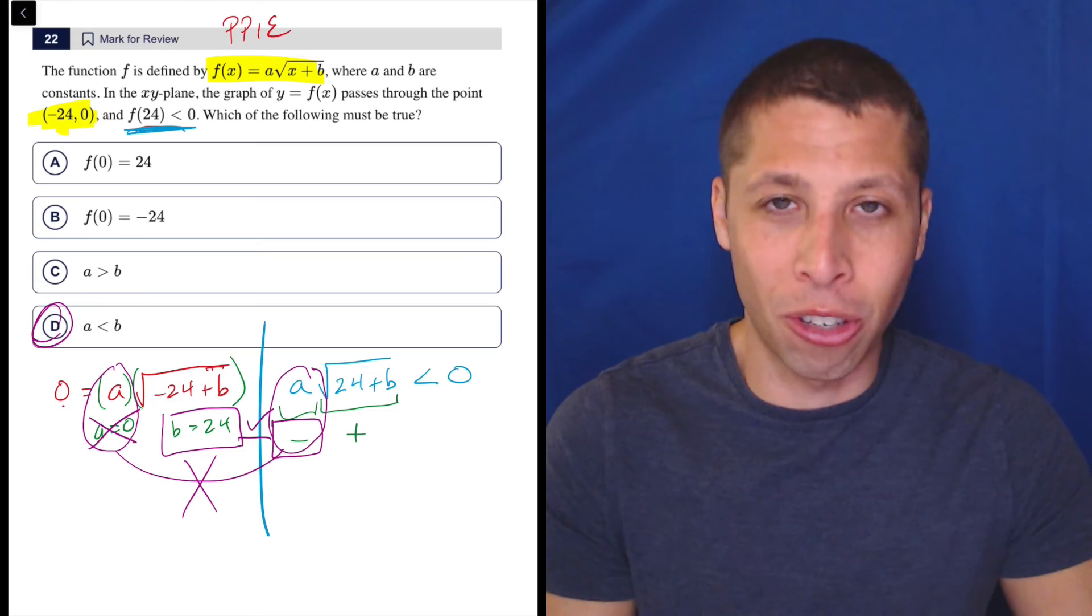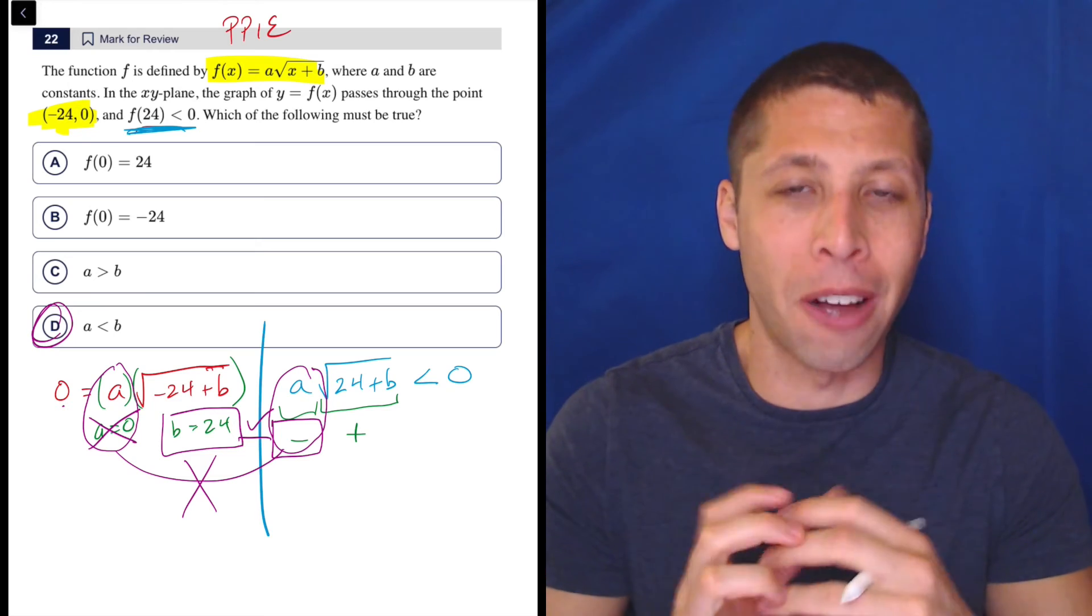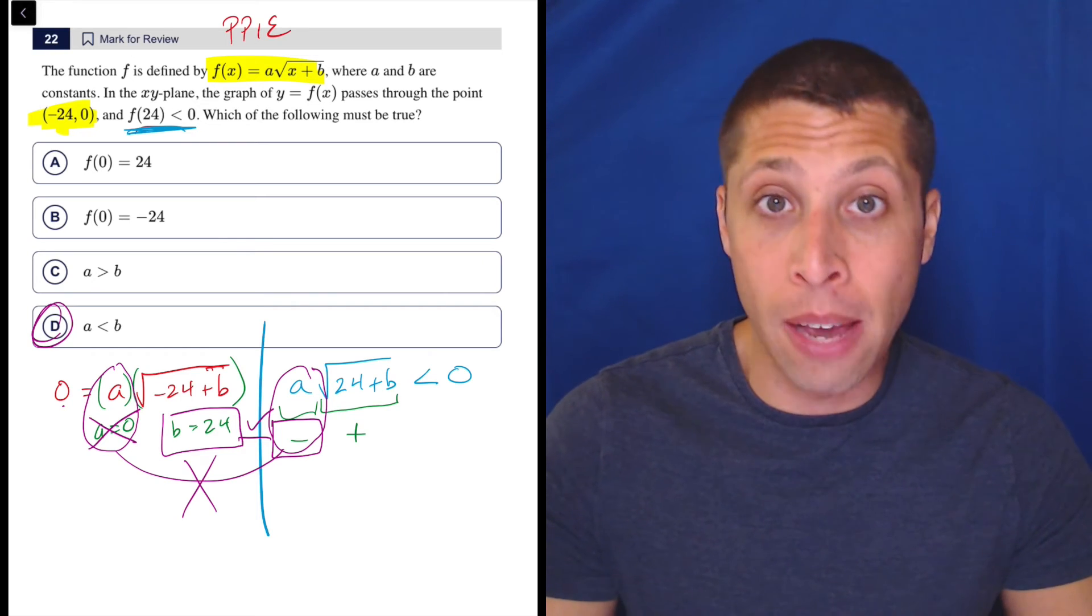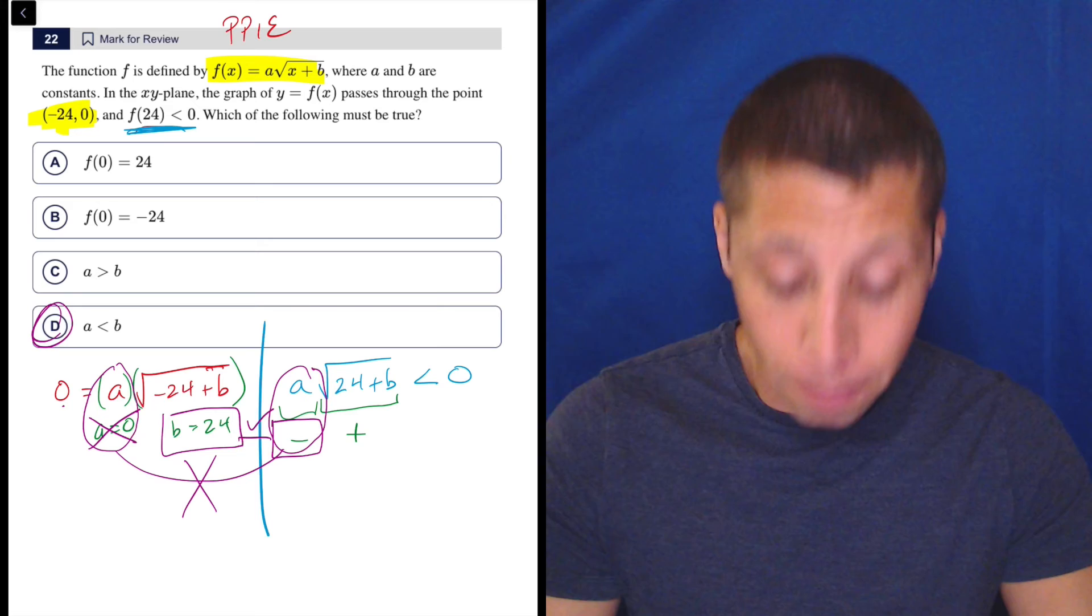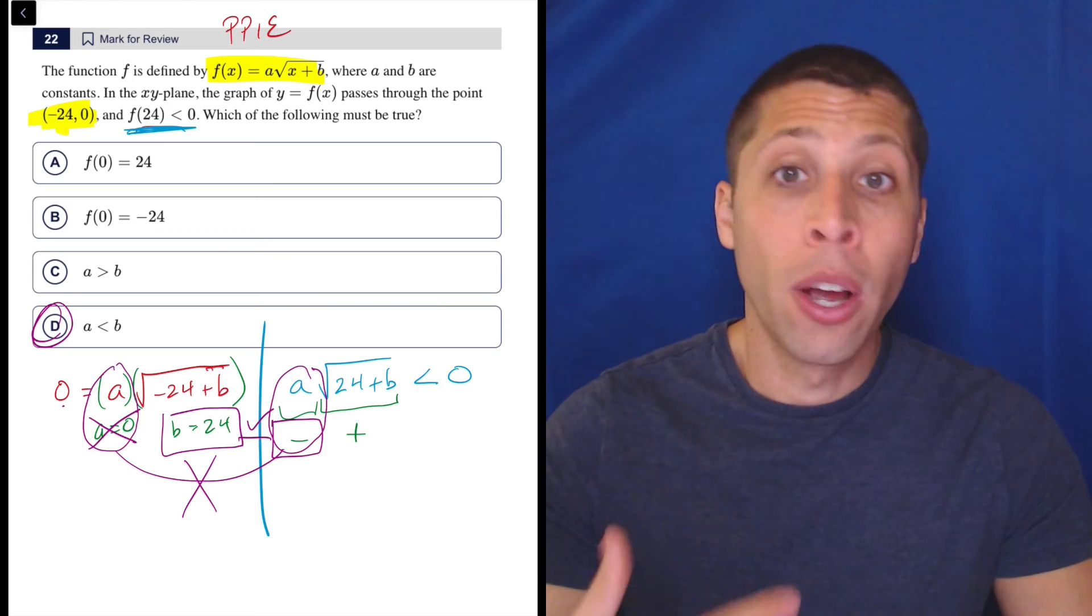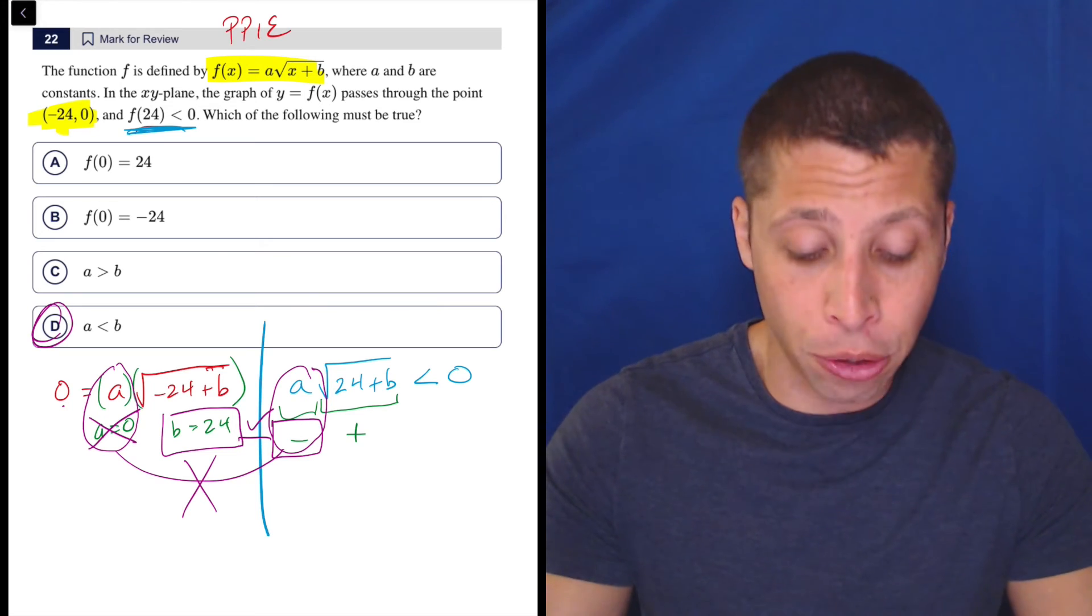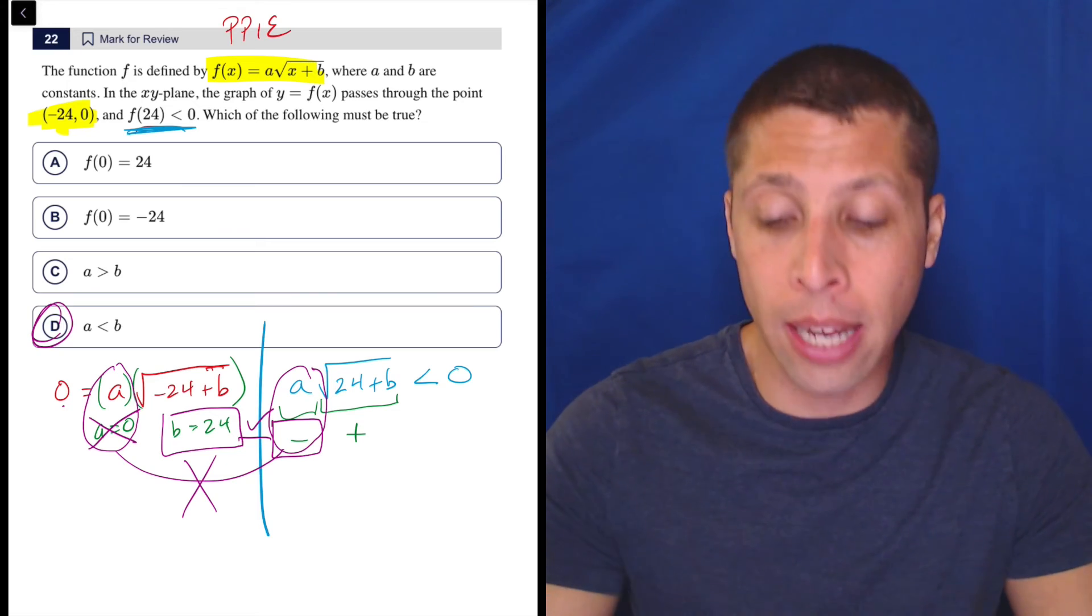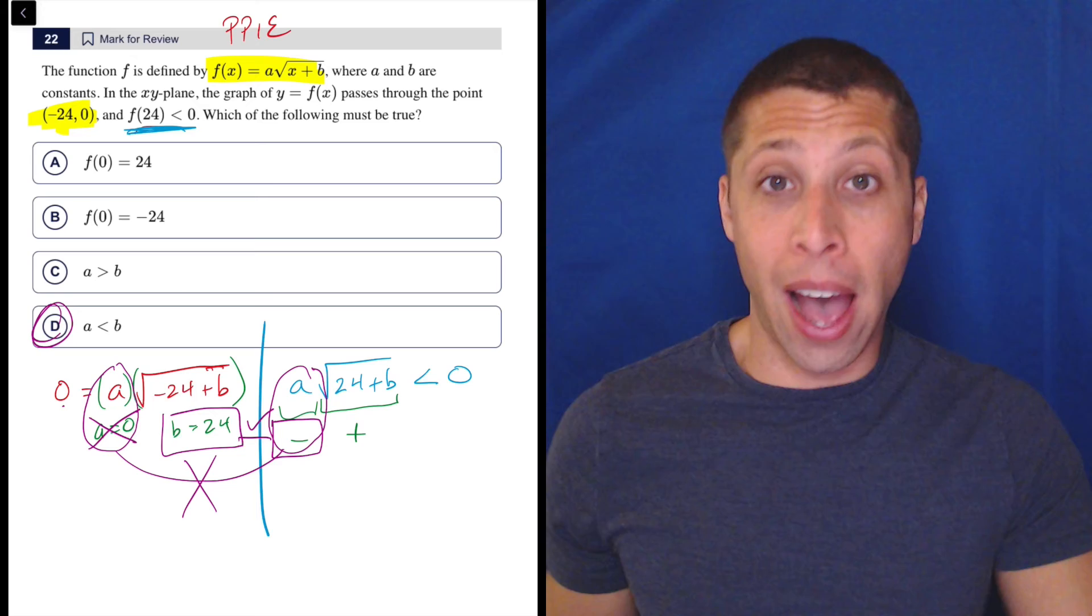But these are ones that we should be really confident with if we want that 700 plus score. We need to think about how radicals behave. The properties of radicals are really important here. We need to think about function notation and recognize that that's a point that we can plug in.